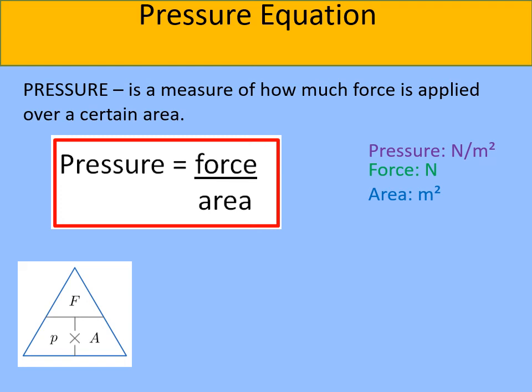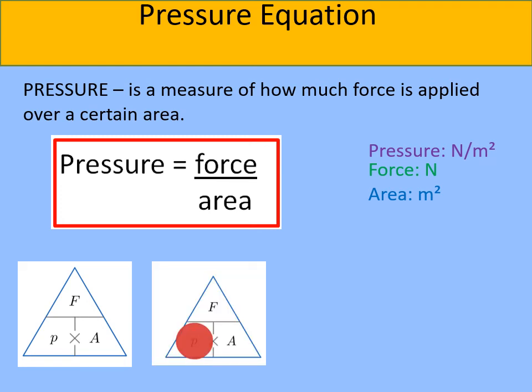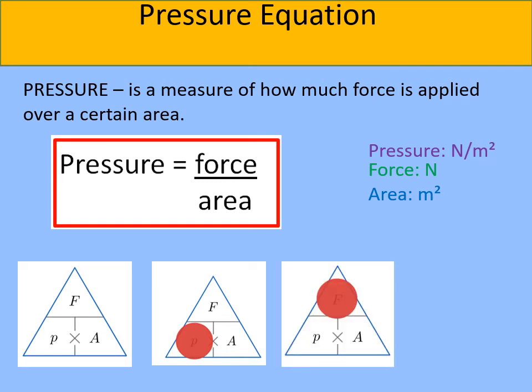There's a formula triangle on the screen. If you want to find the pressure, put your finger over pressure and you're left with force divided by area. If you want to find the force, cover force with your finger and that tells you the force is given by multiplying pressure by area.